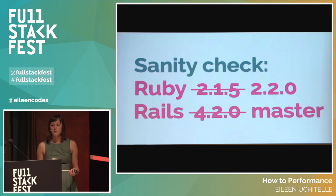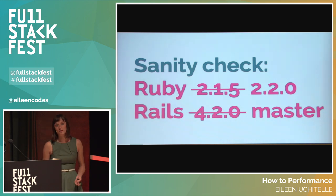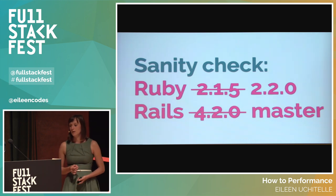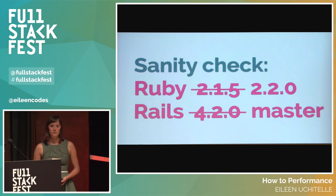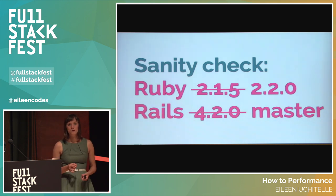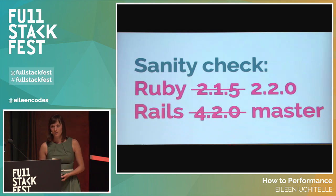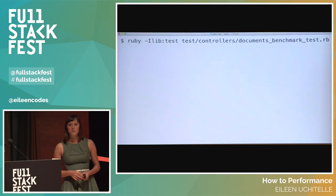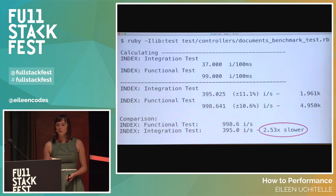Now that I had proved that integration tests were definitely slower than controller tests, and it had nothing to do specifically with Basecamp's code, I wanted to be sure that this was still true with Rails master and the latest Ruby, which at this time was Ruby 2.2.0. Improvements to speed are being made all the time, so it's a really good idea to be sure that your problems still exist on the latest versions because you don't want to redo work that other people have already done. I ran the benchmark script again with Ruby 2.2.0 and Rails master, and they were about the same — a little bit slower, but nothing really concerning.